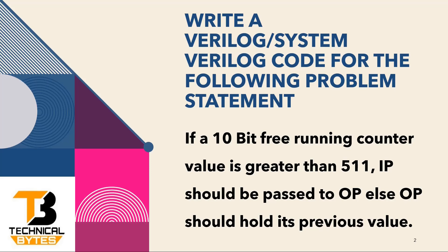Before digging deep into the solution, let us repeat the problem statement. The first problem statement is on your screen: you have to write a Verilog or SystemVerilog code where a 10-bit free running counter — which can count up to 1023 — if its value is greater than 511, input IP should be passed to output OP.